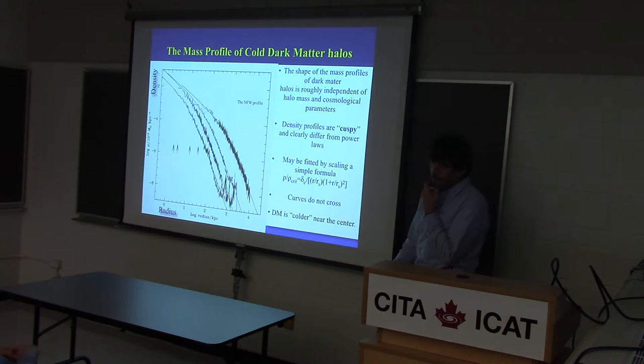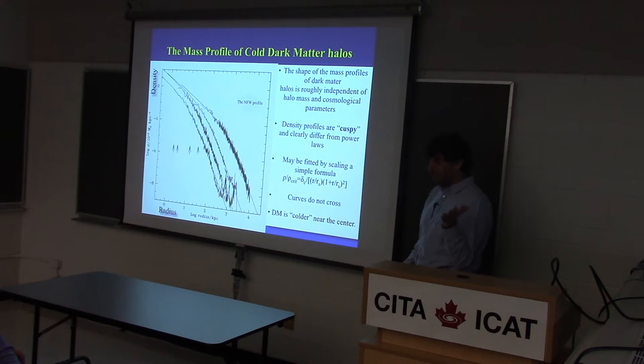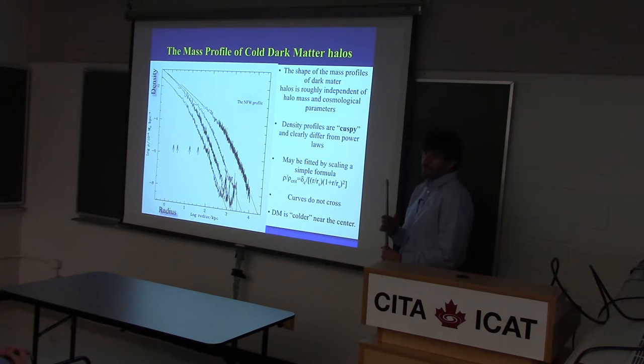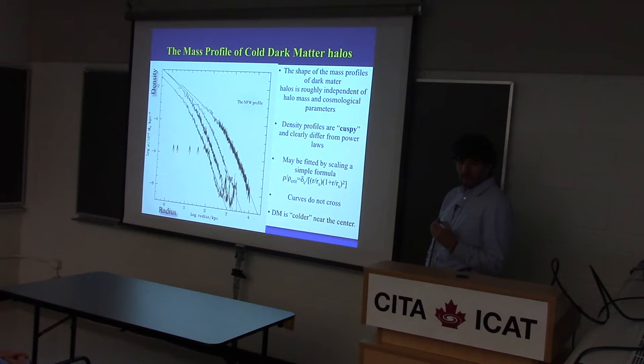Is self-similarity understood to be a property of the collapse itself, or part of the fact that perturbations are initialized at all scales with similar statistics? Basically it's the fact that gravity has no scale — it's scale-free. And the cold dark matter spectrum, although it has scales, they're not dramatic — there are no sharp cut-offs like in alternative dark matter models. So two halos become indistinguishable from each other except for the fact that bigger things are more massive. Scale those out and they look the same.